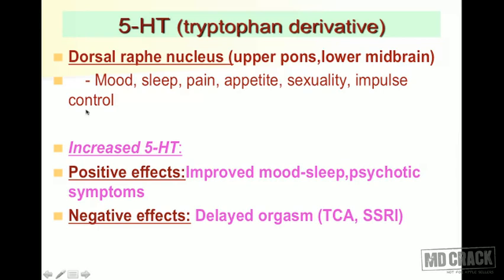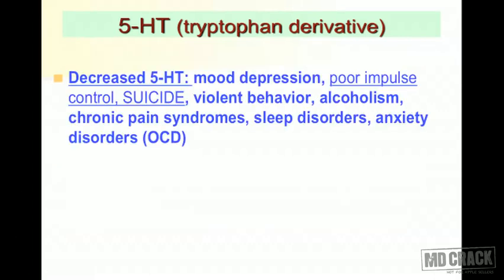Increased 5-HT also has negative effects: delayed orgasm — anorgasmia — a sexual dysfunction commonly seen with tricyclic antidepressants (TCAs) and SSRIs (selective serotonin reuptake inhibitors), both used for depression management. When 5-HT is decreased, it manifests as depression and low mood. In patients who commit suicide, the level of 5-HT is very low.